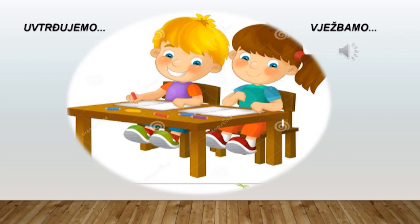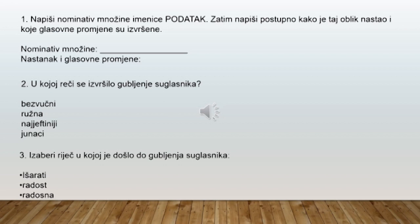Nadam se, džaci šestaci, da ste spremni da utvrdimo i provježbamo ovo što smo danas naučili. Napišite nominativ množine imenice podatak i odredite postupno kako je taj oblik nastao i koja glasovna promjena je izvršena u ovoj imenici. U kojoj riječi se izvršilo gubljenje suglasnika? Bezvučni, ružna, najjeftini, junaci.